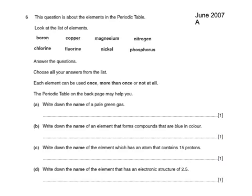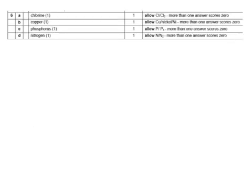Here's a general question about elements in the periodic table. We've got to answer some questions where each can be used once, more than once or not at all. The name of a pale green gas, that's going to be chlorine. An element that forms compounds that are blue is going to be copper. The name of an element with an atom with 15 protons, I know that the one with atomic number 15 is going to be phosphorus. And the name of the element with electronic structure 2,5, well that's in period 2 and group 5, that one is nitrogen. As usual on these questions, only one possible answer for each question.